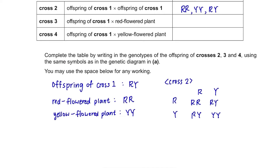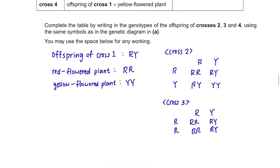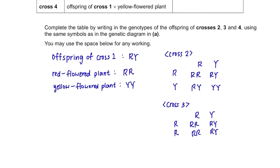Cross 3: offspring of cross 1 and red flowered plant, that would be R-Y and Y-Y resulting in R-Y. The answer is R-R and R-Y. Cross 4: offspring of cross 1 and yellow flowered plant, that would be R-Y and Y-Y resulting in R-Y, Y-Y, R-Y, and Y-Y.